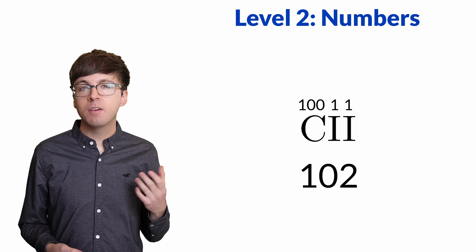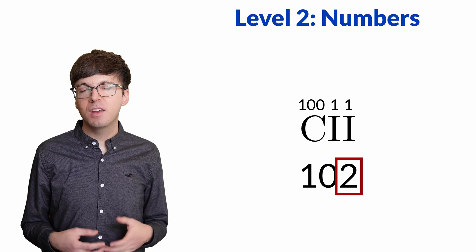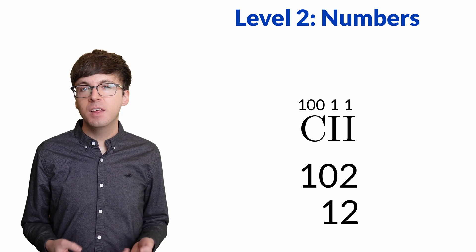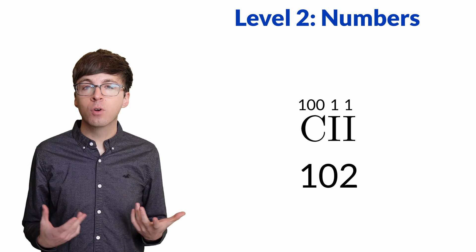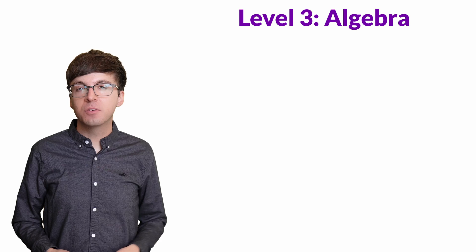In 102, we have 100, 0 tens, and 2 ones. If the 0 is removed, we get 12, a totally different number. The use of 0 as a placeholder allowed humanity to develop more sophisticated number systems. But 0 is not just a placeholder.